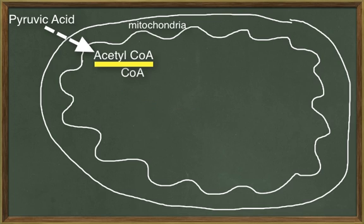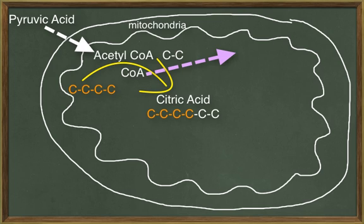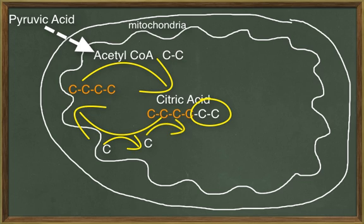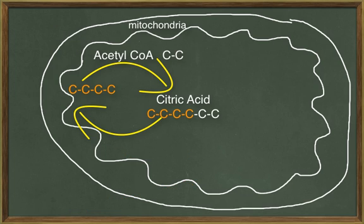At the start of the citric acid cycle, CoA will release the two-carbon acetyl-CoA so that it may be transferred to a four-carbon molecule. Together, these two molecules form a six-carbon compound called citric acid. After releasing the acetyl-CoA, the CoA molecule is free to pick up another acetyl-CoA. At the end of the citric acid cycle, two carbon atoms will have been removed to recreate the original four-carbon compound. These carbons join with oxygen atoms to form carbon dioxide, a waste product that will diffuse out of the cell into the blood and be transported to the lungs to be breathed out.